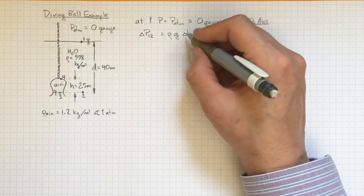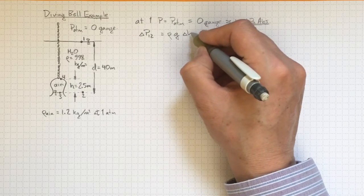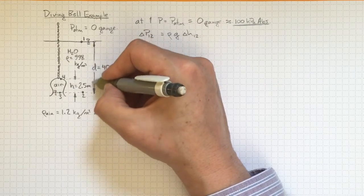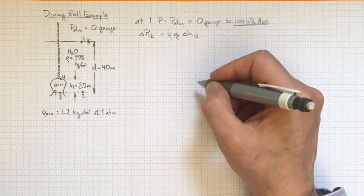If we were very careful about our sign conventions, we could track which direction those changes were going in. But we know from our physical understanding that the pressure is going to be increasing as we go from location 1 to 2. So we won't worry too much about the signs.